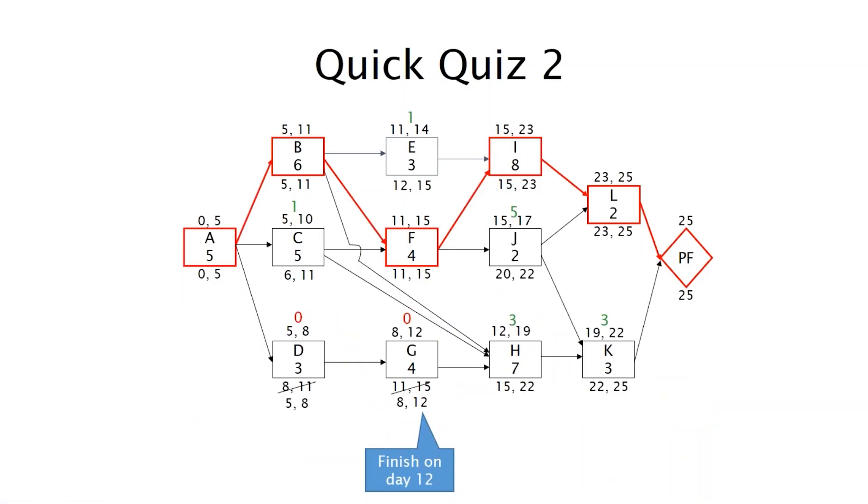One more quick quiz here. We have a path A, B, F, I, L, and finish milestone. And what we're applying here is a constraint that says finish this activity on day 12. And as you can see, yeah, I think my animations are a little mucked up on this one. But by applying a finish on constraint, strictly finish on day 12, that makes the start dates, the early dates match the late dates, and it makes them 12 as well. So then this now becomes a path with zero total float.